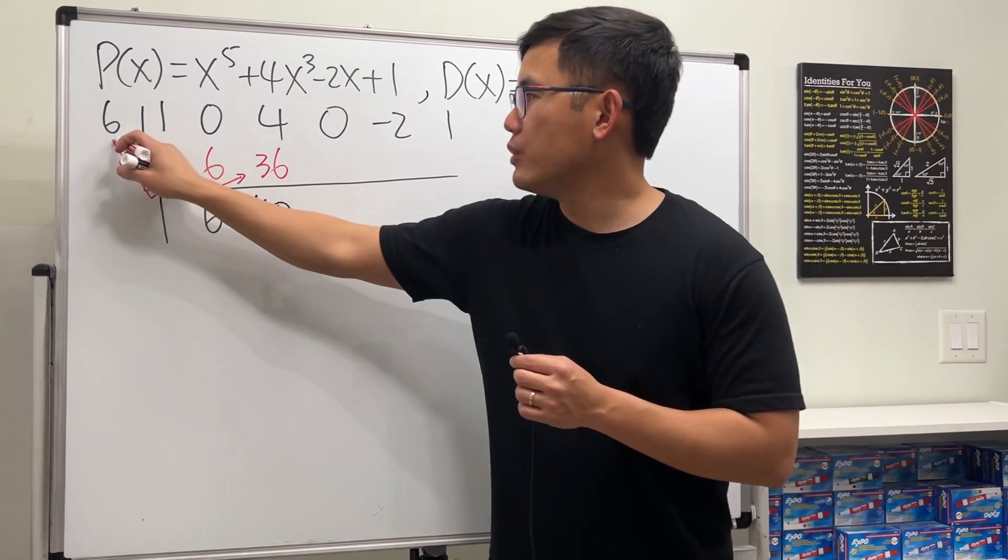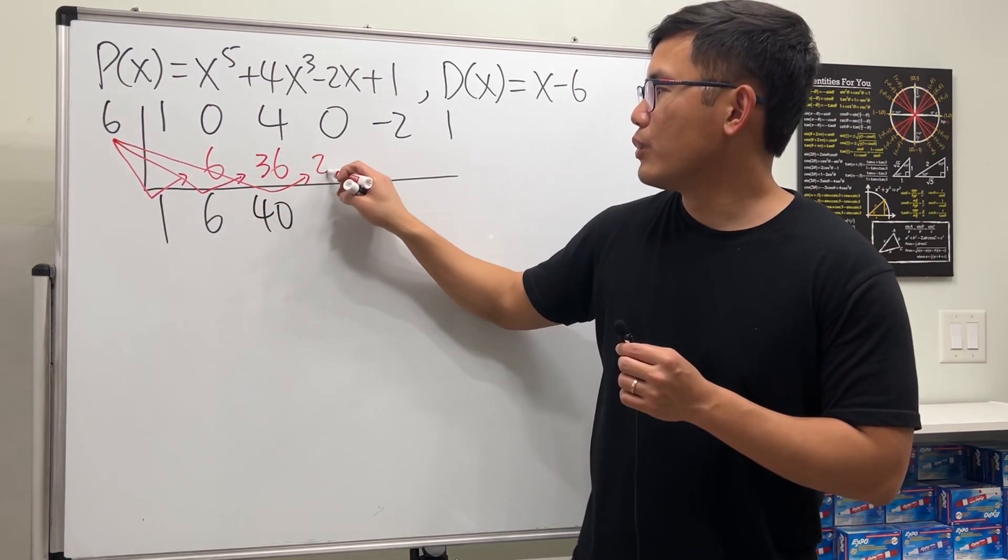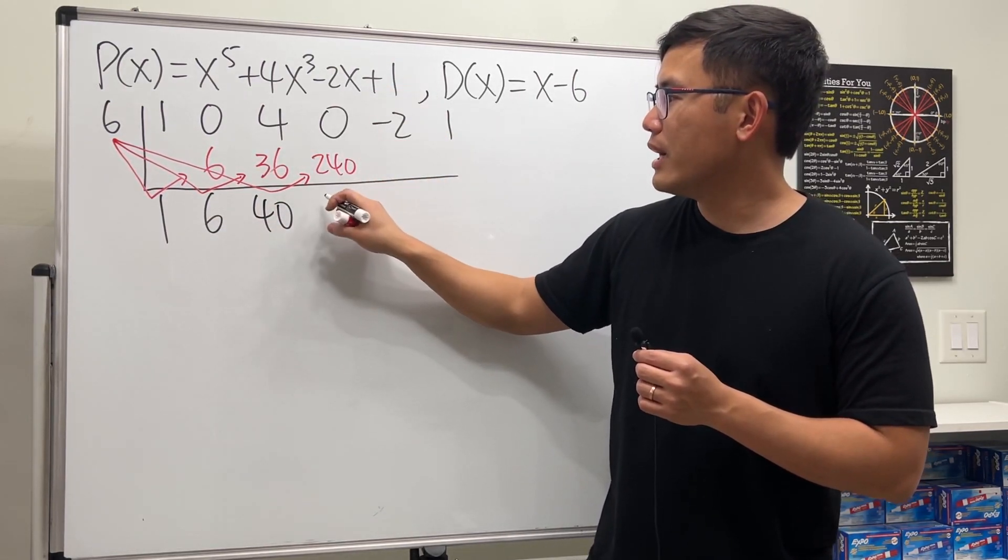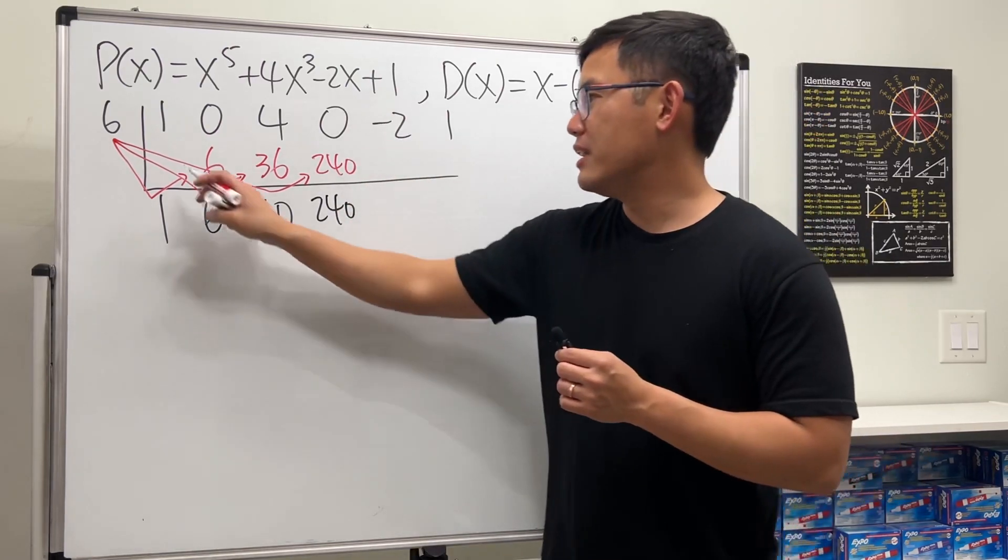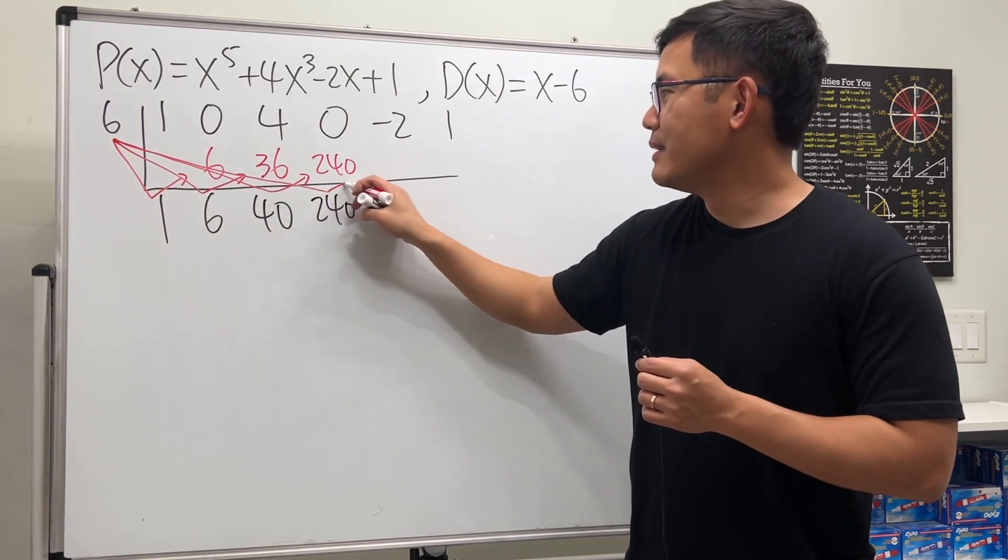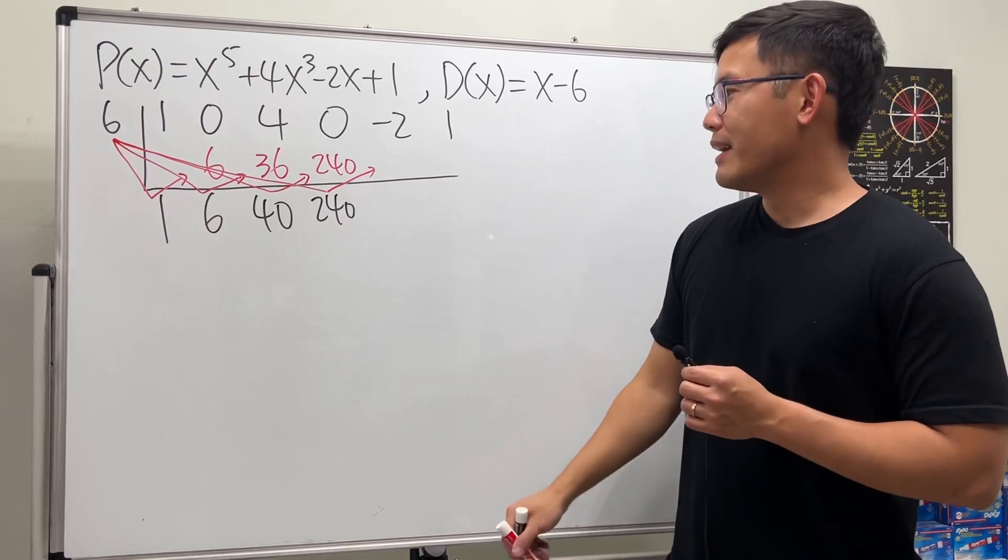Continue. Take this times that is 240, we add, we get 240. I love zeros. And then take this times that and put it here. Wow, that is 1440.